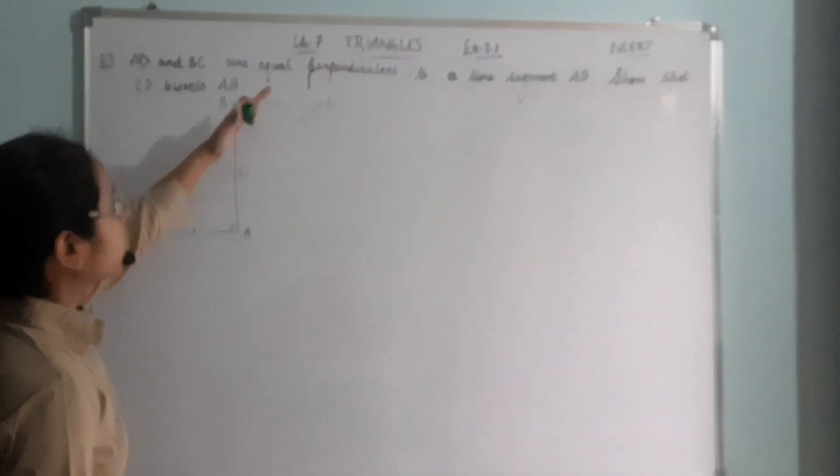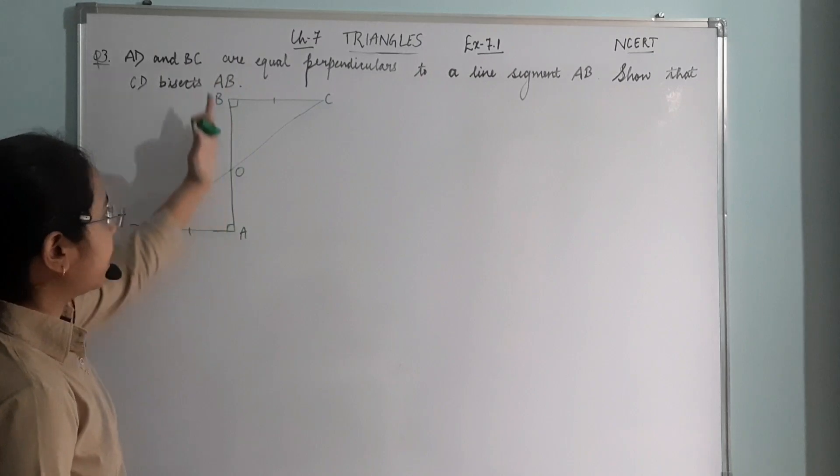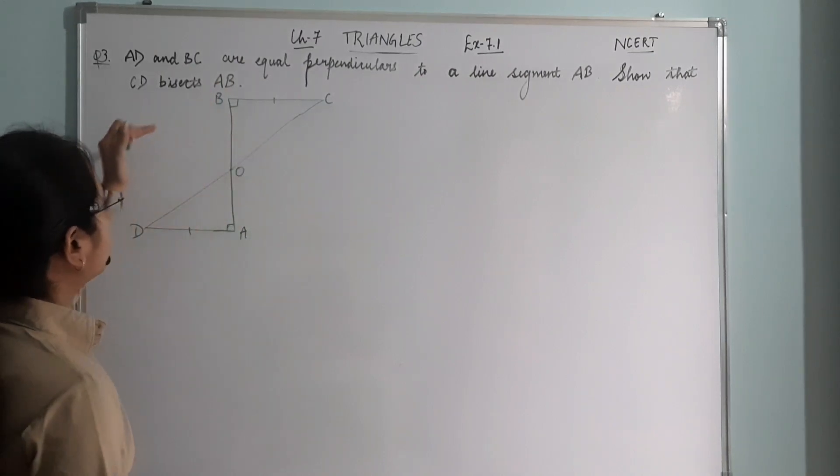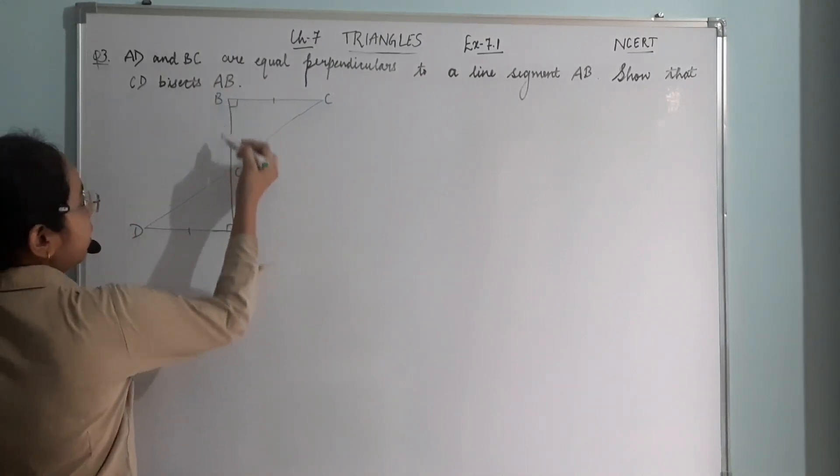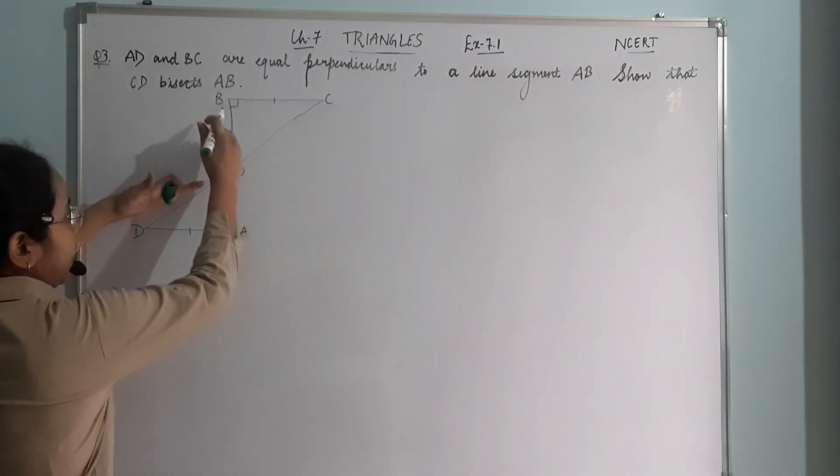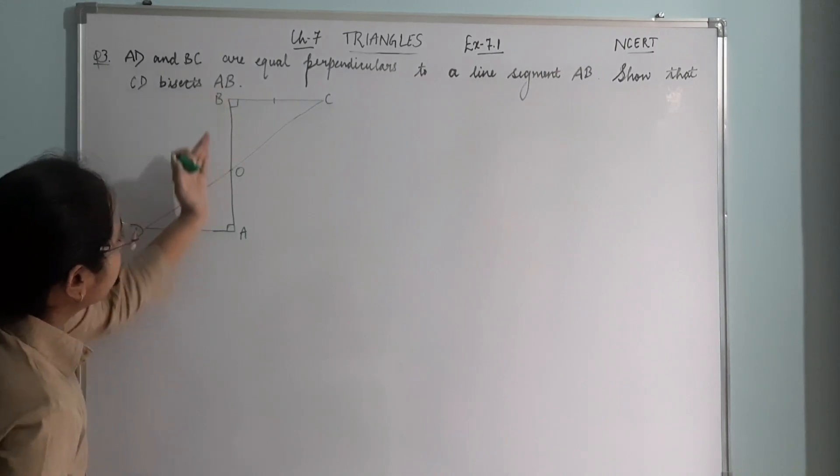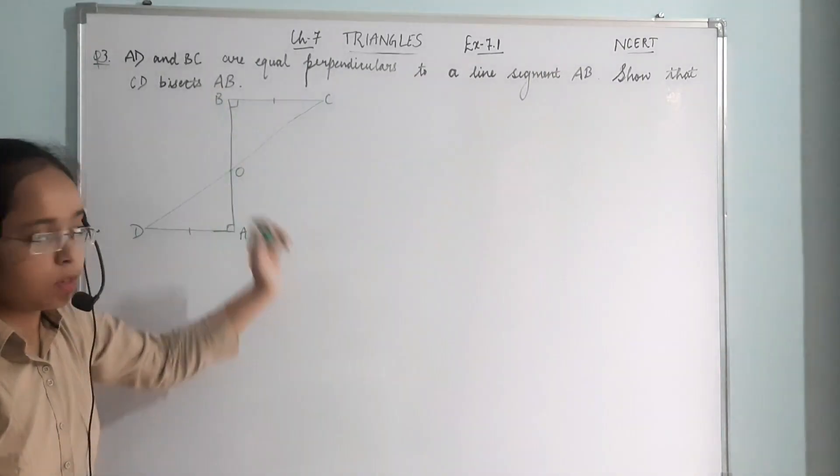AD and BC are equal perpendiculars to a line segment AB. We have to show that CD bisects AB. That means the line CD bisects AB, that is BO and AO are equal.